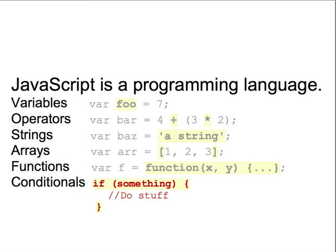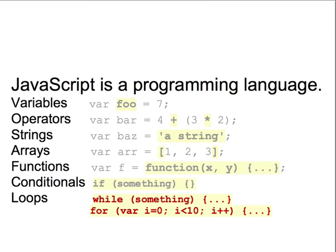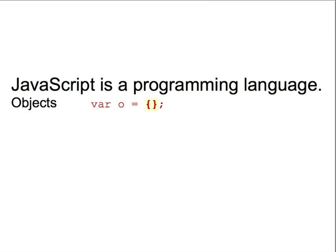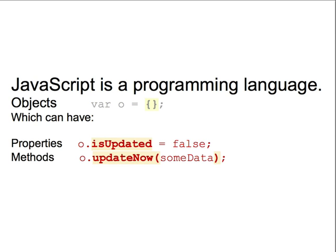JavaScript also has conditional blocks, which allow us to execute some code only if a certain condition is true. It also has loops, which allow us to execute the same section of code multiple times. We can loop for a specific number of times, or indefinitely, as long as a certain condition is true. JavaScript is also an object-oriented programming language. You can create a new object and assign it to a variable, and then create properties and methods on that object. A property is kind of like a variable that's stuck to an object, and a method is kind of like a function that's stuck to an object. Objects can help you to better organize your code.